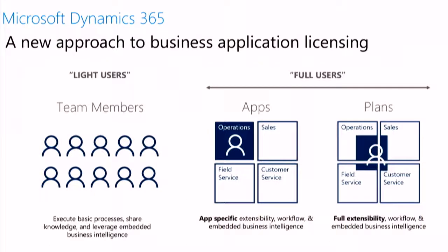We do have two types of users. The first user type is the so-called light user. They execute basic processes — that's things like doing travel and expenses, for example, or approving something.